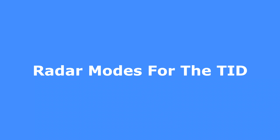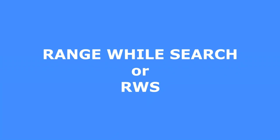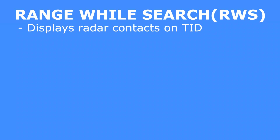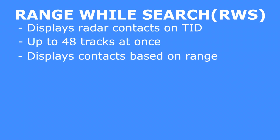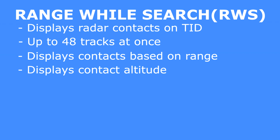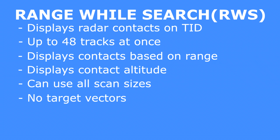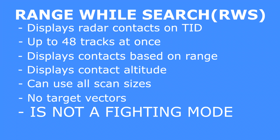Now that all that is out of the way, we can talk about the two main modes you will be using to see contacts on your TID. The first is Range While Search, or RWS, which will display radar contacts on the TID. Range While Search can display up to 48 concurrent tracks on the TID and displays them based on the target's range from your aircraft. RWS will also display the target's altitude and is great for finding targets over a large area. However, RWS does not display target vectors, and you cannot launch any missiles in this mode — it is purely for finding and ranging targets.